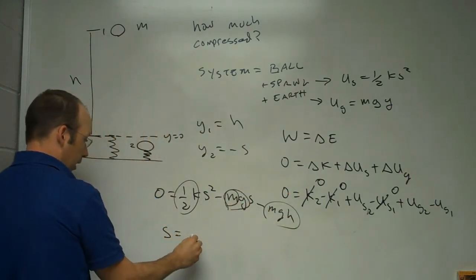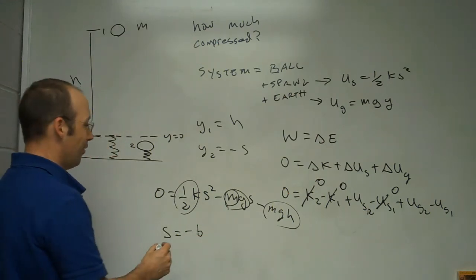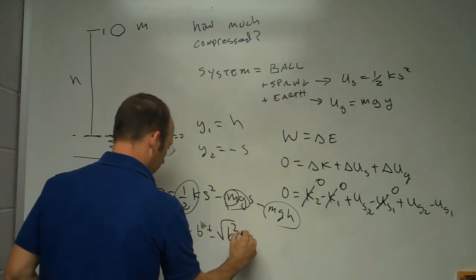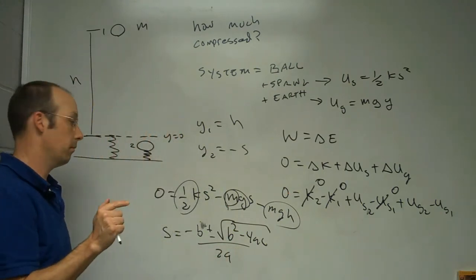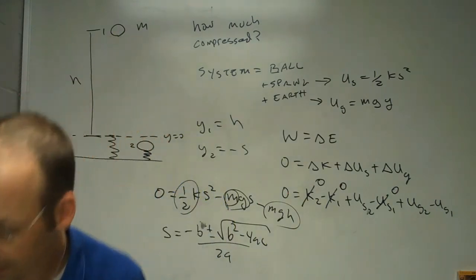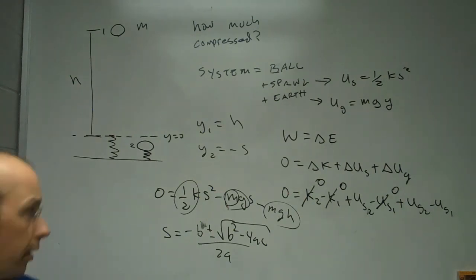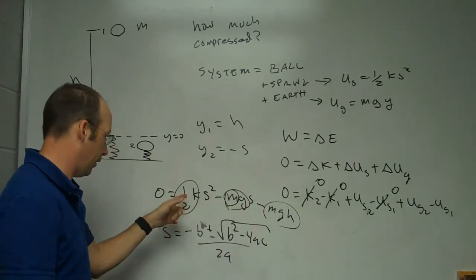So s equals negative b plus or minus the square root of b squared minus 4ac, all over 2a. You plug in b as the coefficient with the negative sign, c as that value with a negative, and a as the leading coefficient. That's how you solve for the compression s.